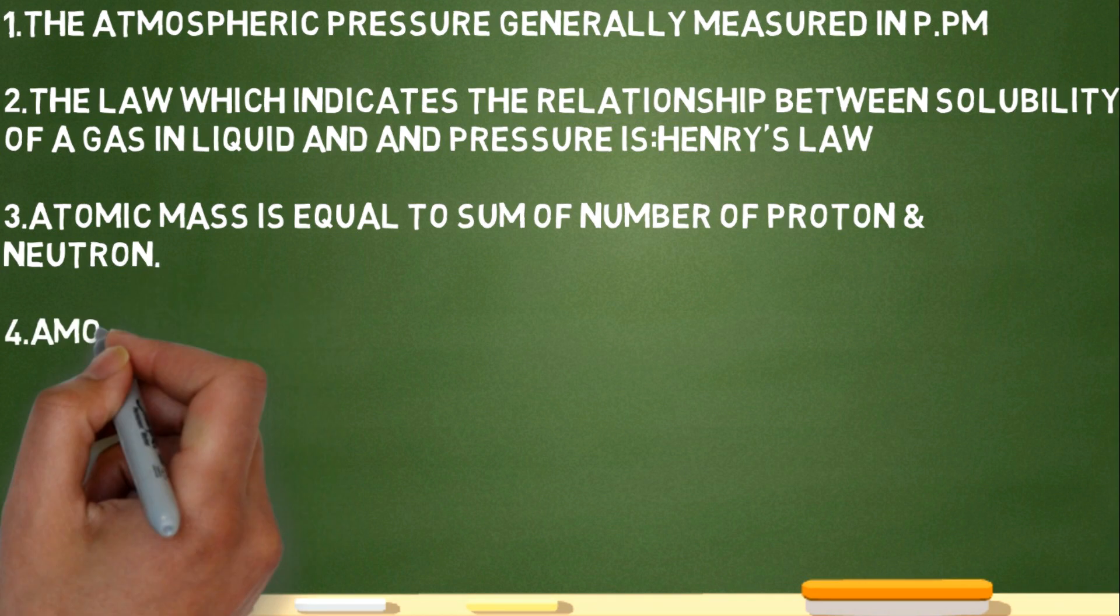Atomic mass is equal to the sum of - this is quite simple question but we have a mistake. Atomic mass is given, atomic number is given. Atomic mass is equal to sum of number of proton and neutron.